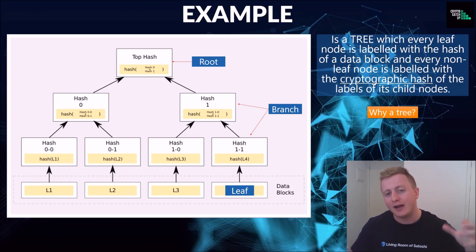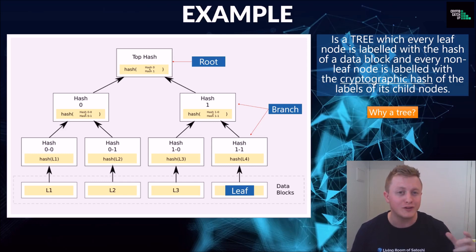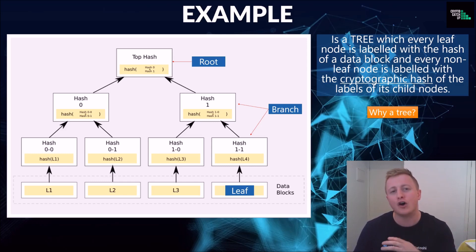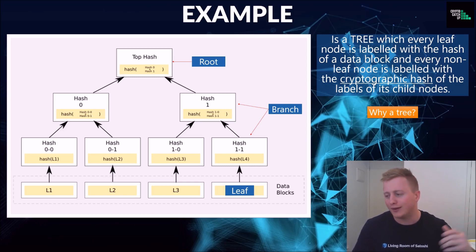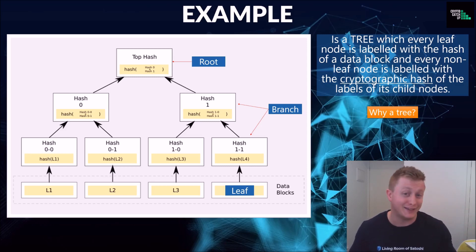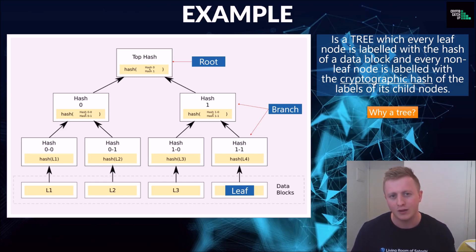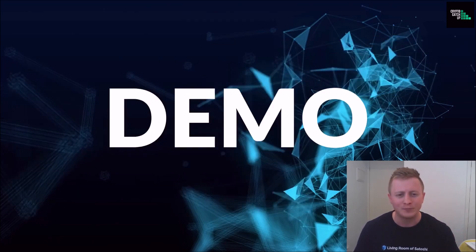The downside to a Merkle Tree, however, is that it only gives you a record of transactions. It doesn't let you know how much BTC that particular account had at any one time — which is what we're going to get into with Ethereum shortly.